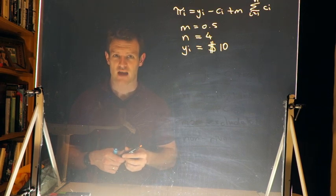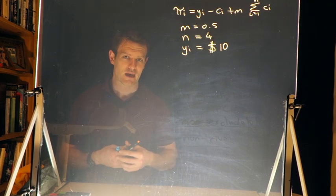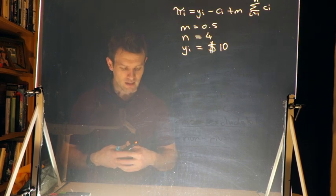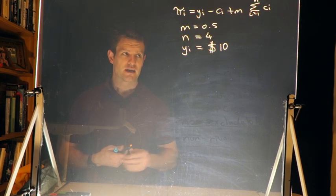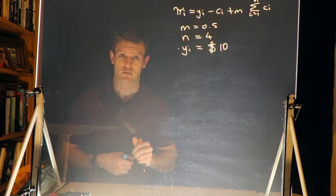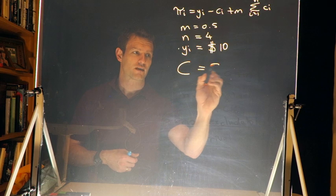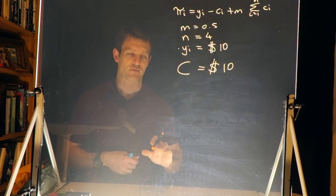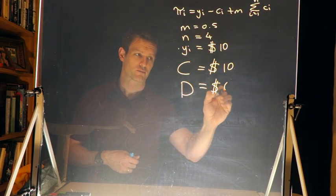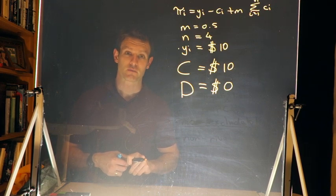We're going to simplify the interaction substantially from what we typically see in an experiment, to think through why this looks like a prisoner's dilemma or social dilemma. We want to think about what happens if I, as a player, have to decide whether to contribute or not. With ten dollars, there are two options: contribute — meaning I give all ten dollars to the public good — or don't contribute, meaning my contribution is zero. This applies to other players as well.